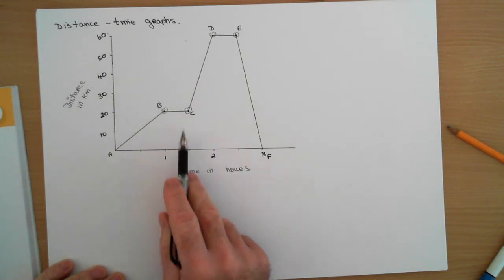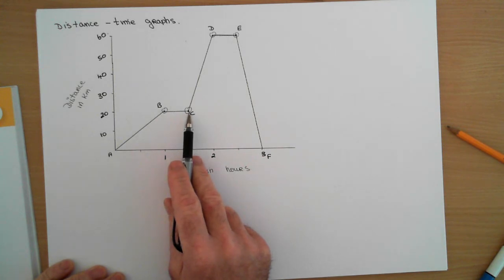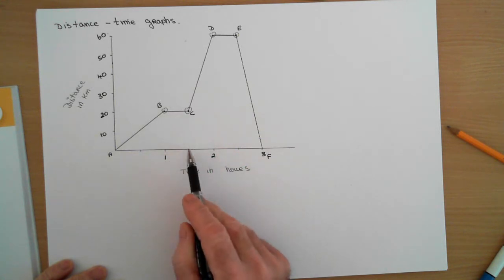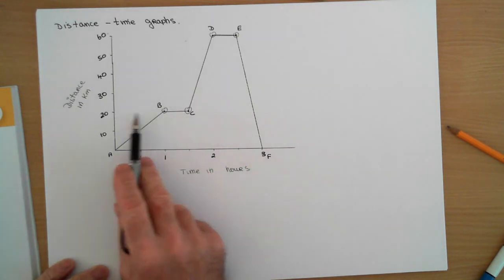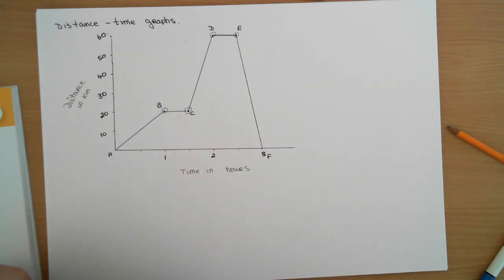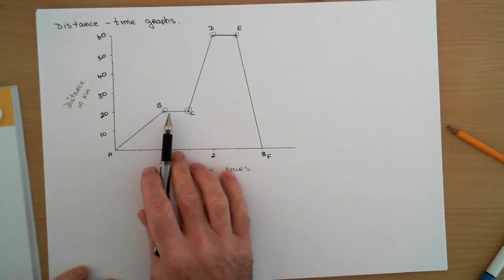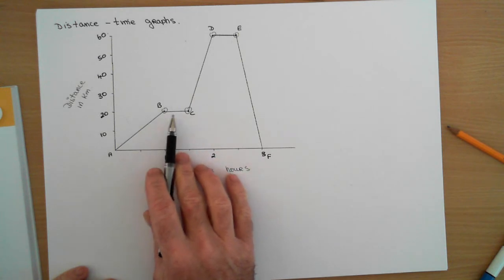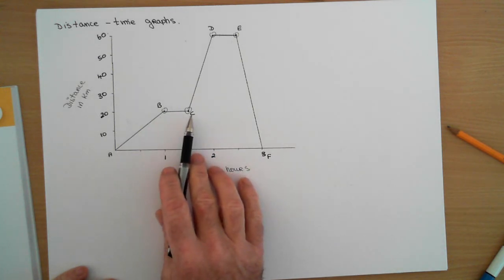In the next half hour from B to C, they were still 20 kilometers away. So how far did they travel from B to C? Zero. In other words, they stopped at this stage because between B and C after an hour and a half, they're still 20 kilometers away. So during that time, a horizontal line like that means there is rest.